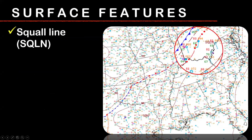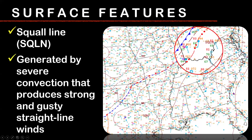You may also see something like a squall line — two dots and a dash — typically depicted ahead of a front. That indicates you'll have some kind of severe convection producing very strong and gusty straight-line winds ahead of that squall line.